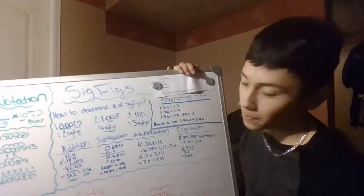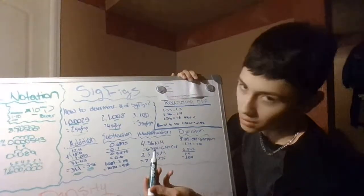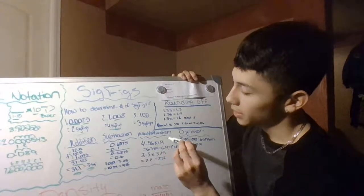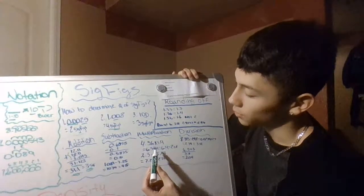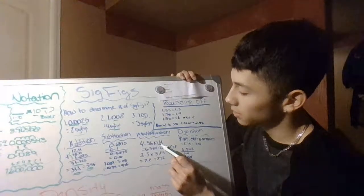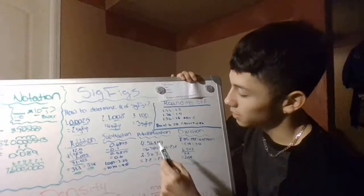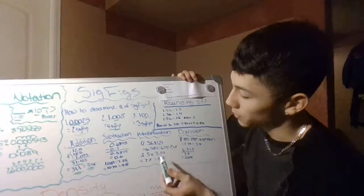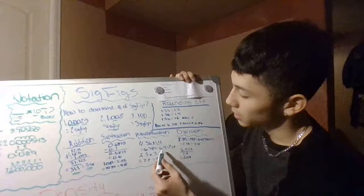Moving on to multiplication — it works the same way with limitations. You have 4.56 times 1.4. When you multiply, you get 6.384, then round it off. Your limitation is 1.4, which only has two sig figs, so you round your answer of 6.384 to 6.4, which equals two sig figs.